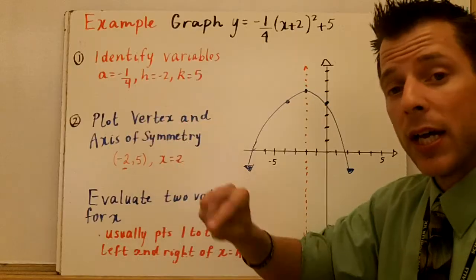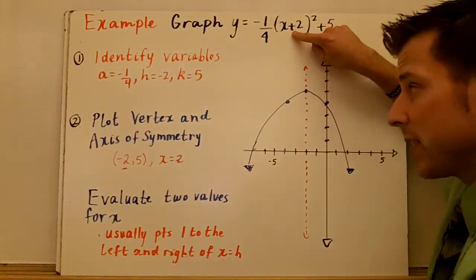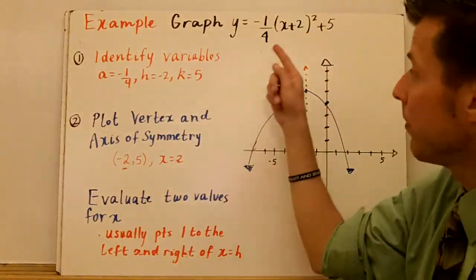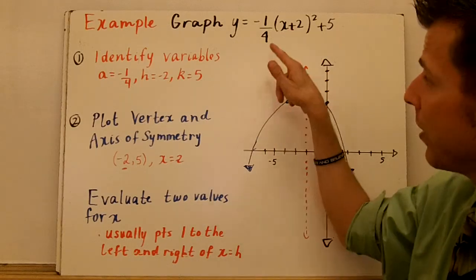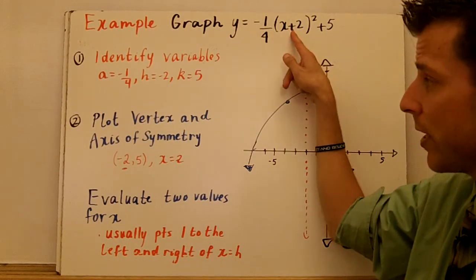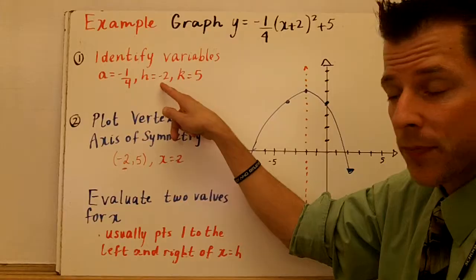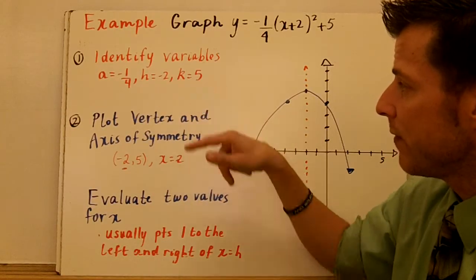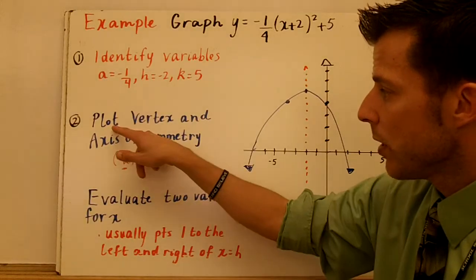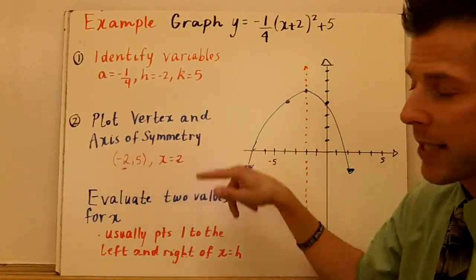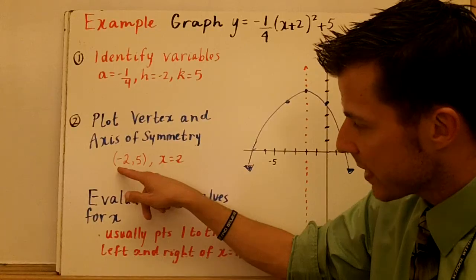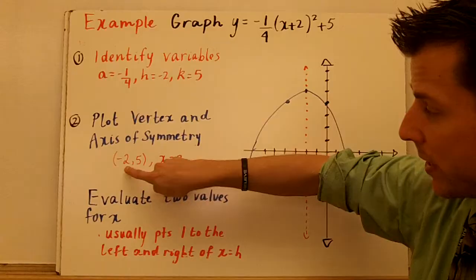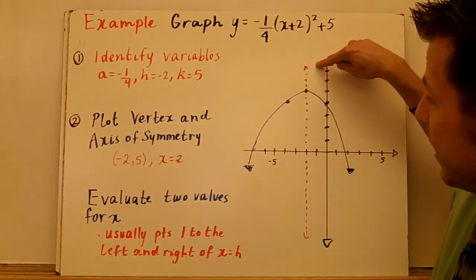H is negative 2. Now, here's the point. It's positive 2, but h is negative, because when you subtract a negative number, you get positive. Just keep in mind, whatever this sign is here, this operation, h is opposite. So I identify my variables. We're going to actually move two units left and five units up. So we're going to plot the vertex now and the axis of symmetry. The vertex is negative 2, 5. The axis of symmetry is that x coordinate, x equals negative 2.